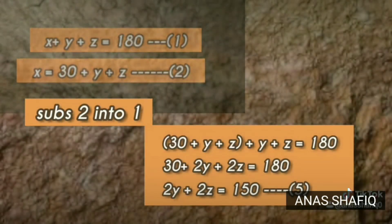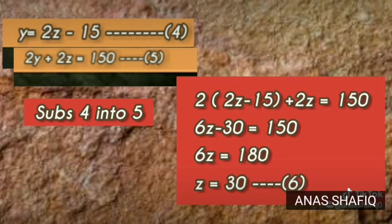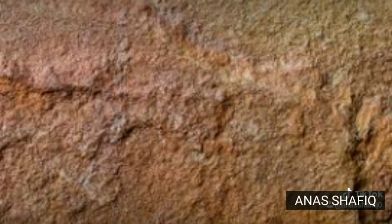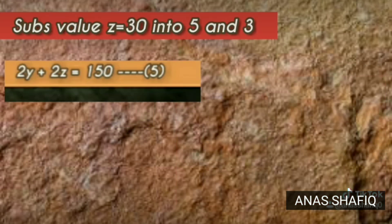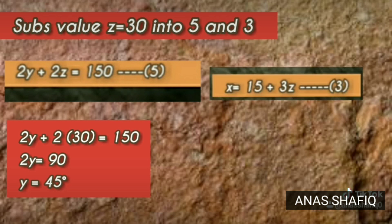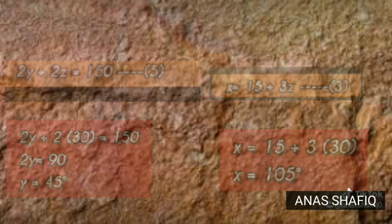Then, we substitute equation 2 into equation 1, and we get equation 5: 2y plus 2z equals to 150. Substituting equation 4 into equation 5, we get z equals to 30. Then, substituting z equals to 30 into equation 5 and 3, we get y equals to 45. So, that's all. Happy solving!